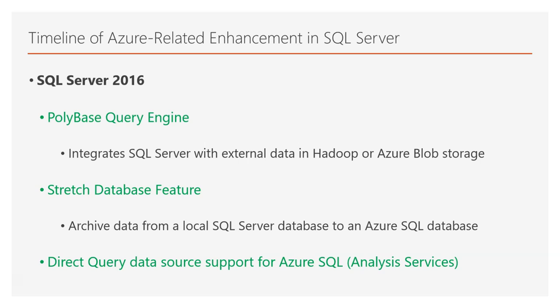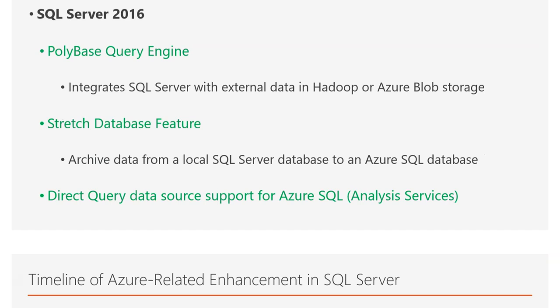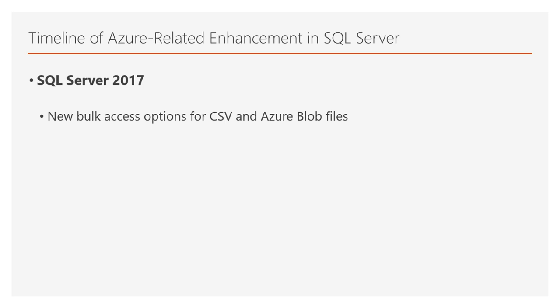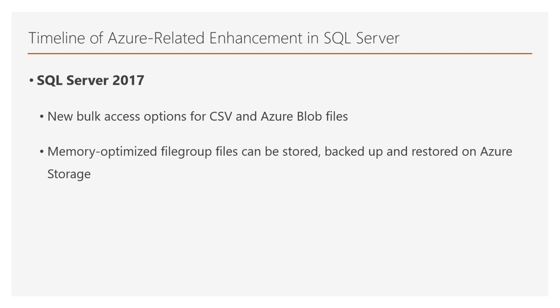More Azure integration features were added in SQL Server 2017. These features were new bulk access options for CSV and Azure Blob files, as well as the enhancement based on which memory-optimized file group files could be stored, backed up, and restored on Azure Storage.